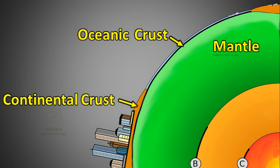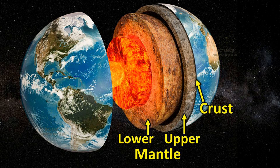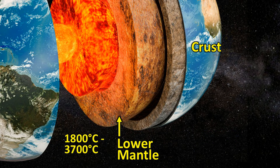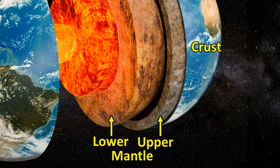Just below the crust lies the mantle, which is about 2,900 kilometers thick. It is divided into two parts: the upper mantle and the lower mantle. The mantle consists of rocks and minerals that are extremely hot. The temperature in the upper mantle ranges from 1,000 to 1,800 degrees Celsius, while in the lower mantle it rises from 1,800 up to about 3,700 degrees Celsius. At such high temperatures, you might think that the rocks inside the earth should melt and become liquid. But surprisingly, the upper mantle is almost completely solid, and even the lower mantle remains mostly solid.